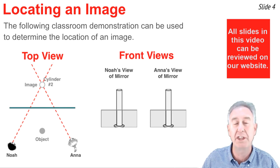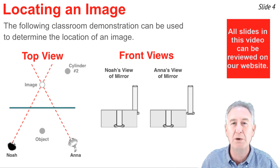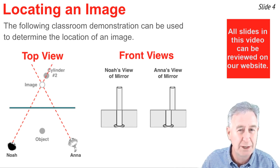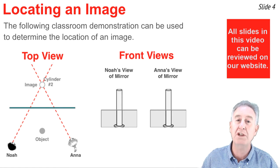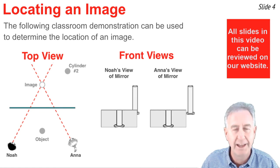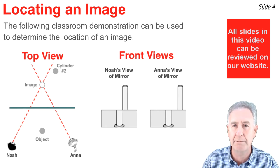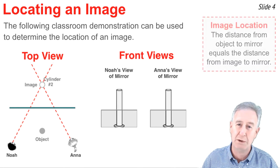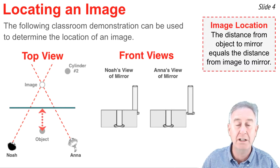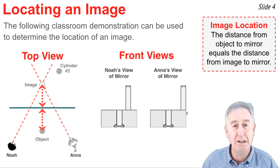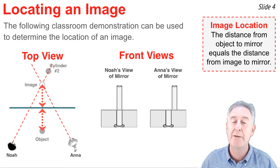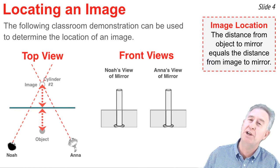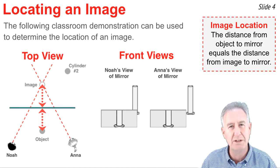And since Anna and Noah are on the two extremes of the classroom, I have found the location of the image for every observer in the room. The cylinder, number two, is located at the image location, the location in space where it seems to Anna and it seems to Noah as though the light is coming from, and it also seems to every observer in that classroom. I have found the image location. And then I make a measurement from the mirror to the object and from the mirror to the image. And I learn that that image is as far behind the mirror as the object is in front of the mirror. In other words, the distance from the object to the mirror is equal to the distance from the image to the mirror.